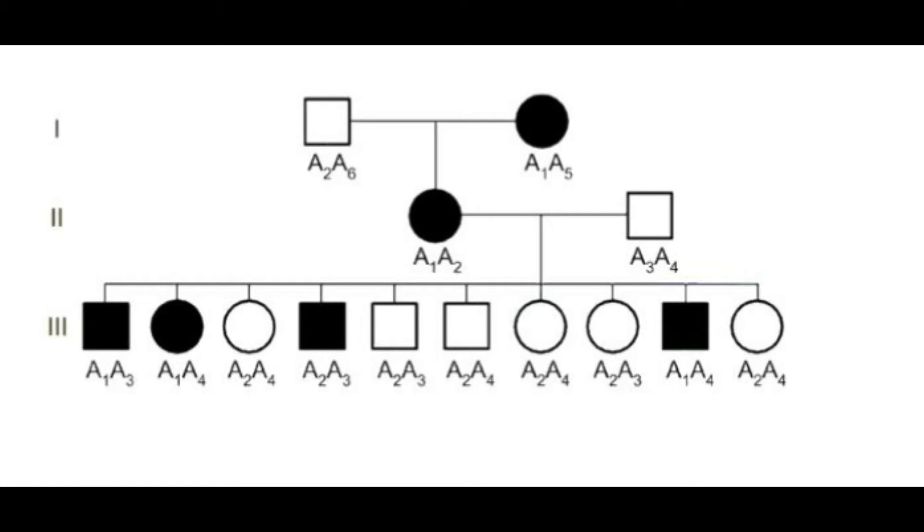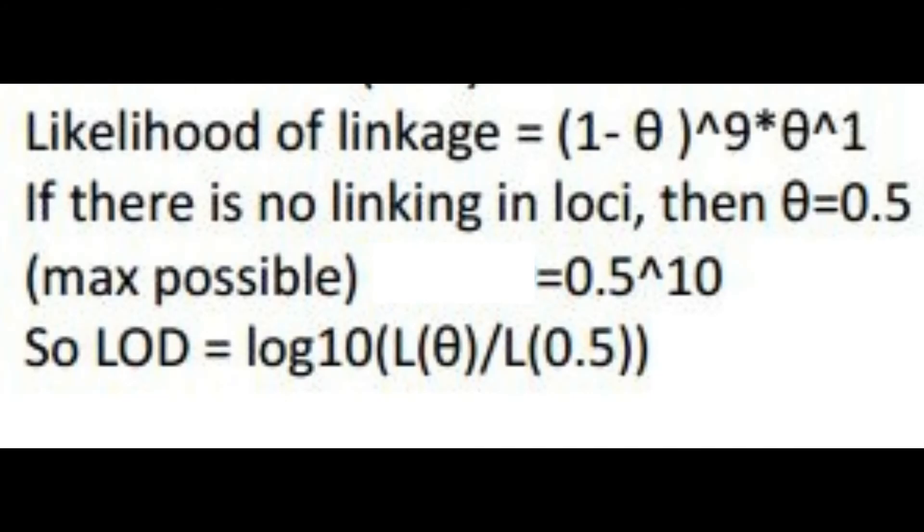We can now calculate the value of theta for the 10 people in this generation, with one recombinant and nine non-recombinants. We represent the non-recombinants with 1 minus theta. The likelihood of linkage will be given by this particular formula, which is 1 minus theta raised to the power of